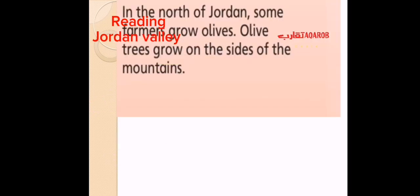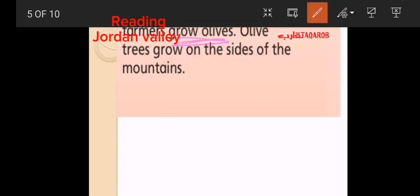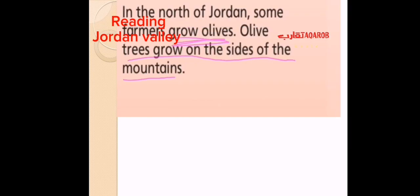The third paragraph: In the north of Jordan, some farmers grow olives. Olive trees grow on the sides of the mountains. So most of our food comes from plants or animals. Chickens give us meat and eggs. Farmers in the Jordan Valley grow olives, vegetables, and fruit.